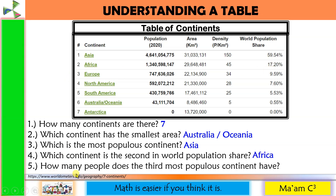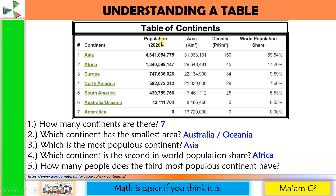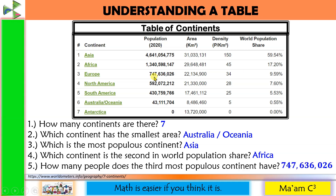And number five: how many people does the third most populous continent have? Look for the population — the third most is Europe, and the population is 747,636,026 people.